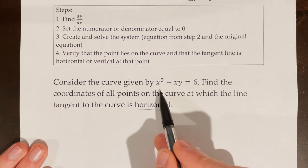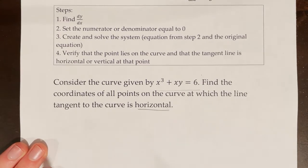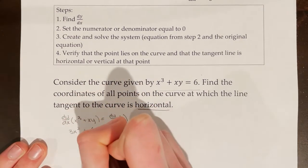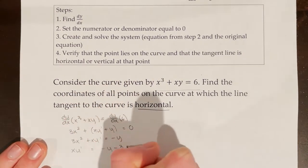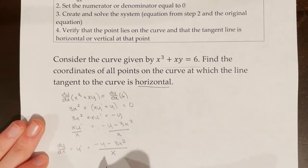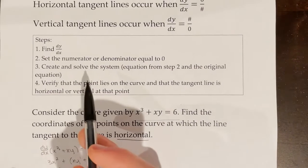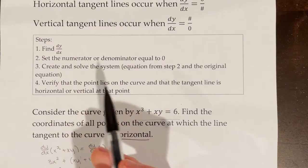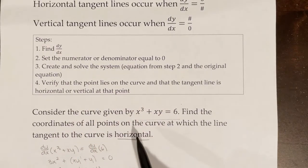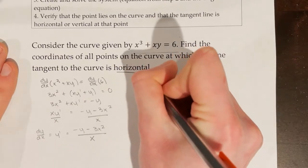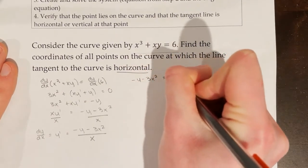If you don't know how to find dy/dx of an equation like this, please watch my second video on implicit differentiation before attempting this. I've found dy/dx, or y prime. The next step is to set the numerator equal to zero, since I'm looking for horizontal tangent lines. So negative y minus 3x² needs to equal zero.